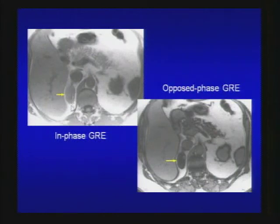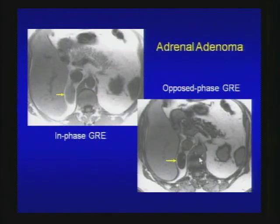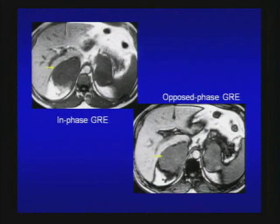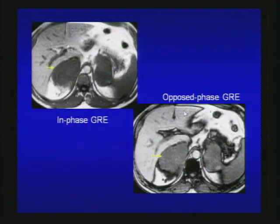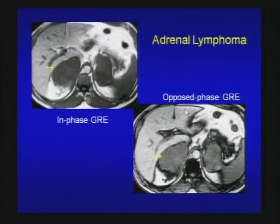An incidental right adrenal mass demonstrates significant signal dropout on the opposed-phase image — characteristic for benign adrenal adenoma. Another case: large bilateral adrenal masses, non-specific, does not demonstrate signal dropout on opposed-phase. Differential would include adrenal lymphoma, metastasis, or possibly pheochromocytoma. This turns out to be a case of adrenal lymphoma. On oral boards, look at the images and give a differential — you may get additional history which directs you to the correct answer. If you give a reasonable differential, that's enough.